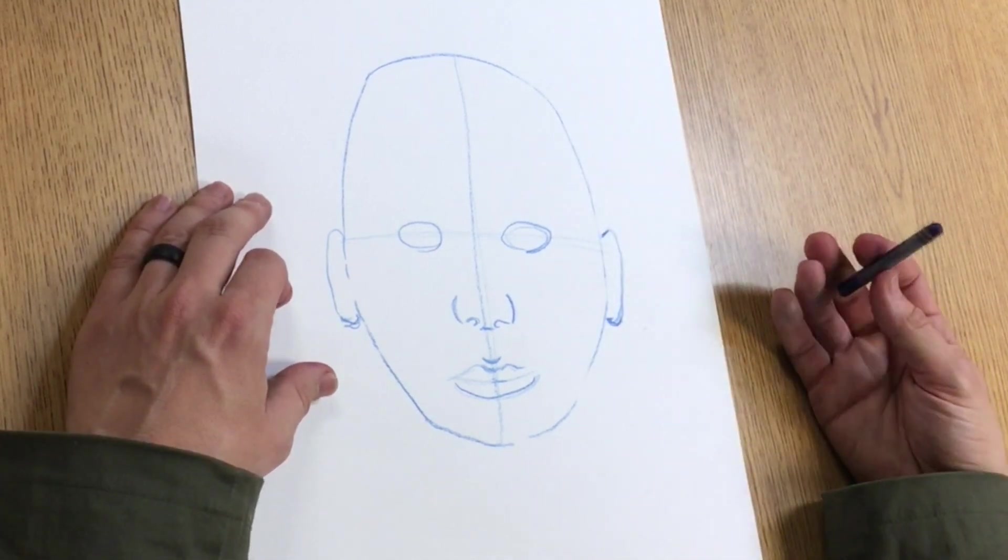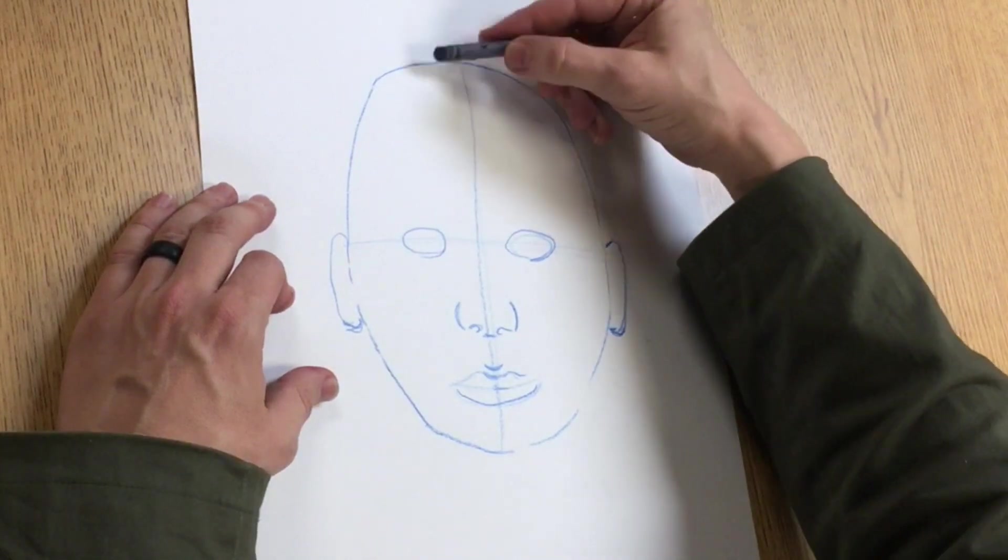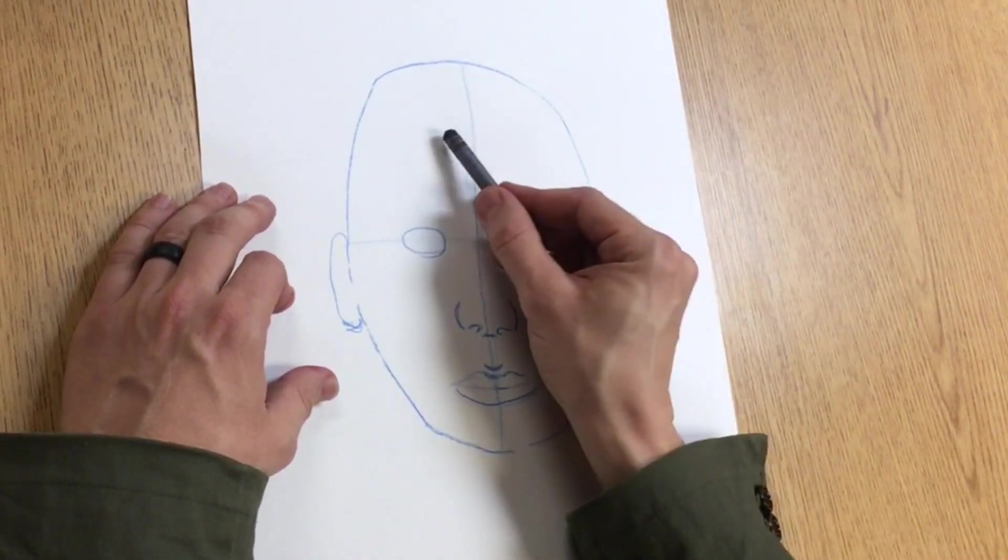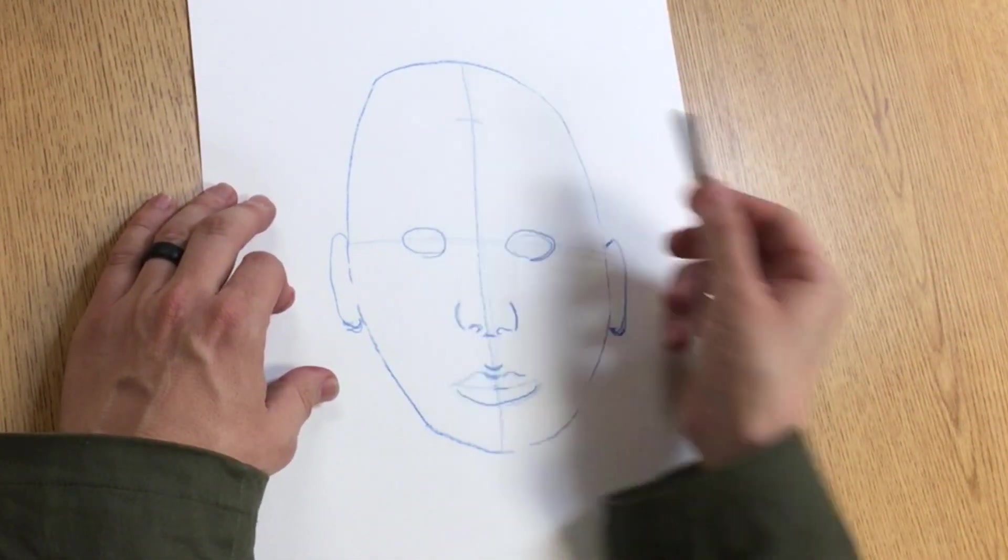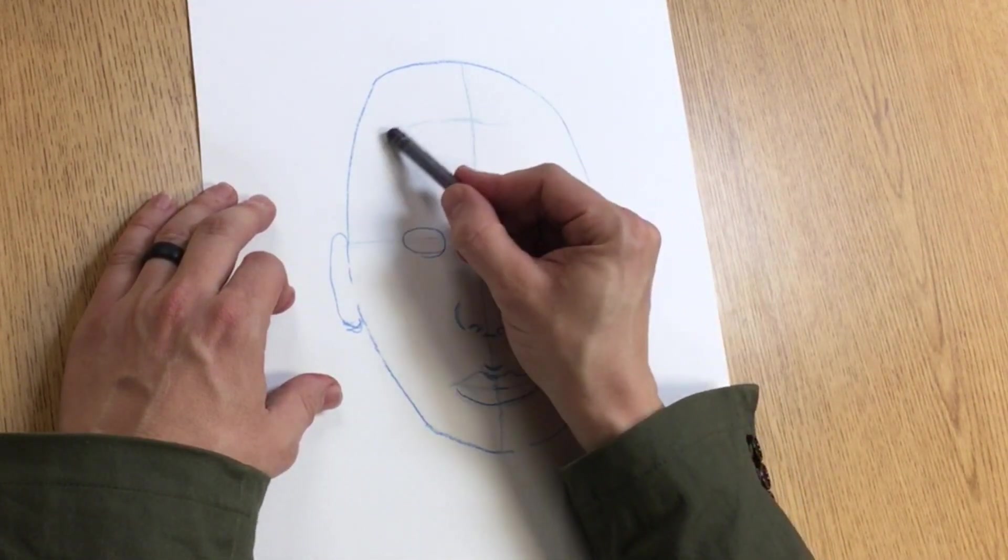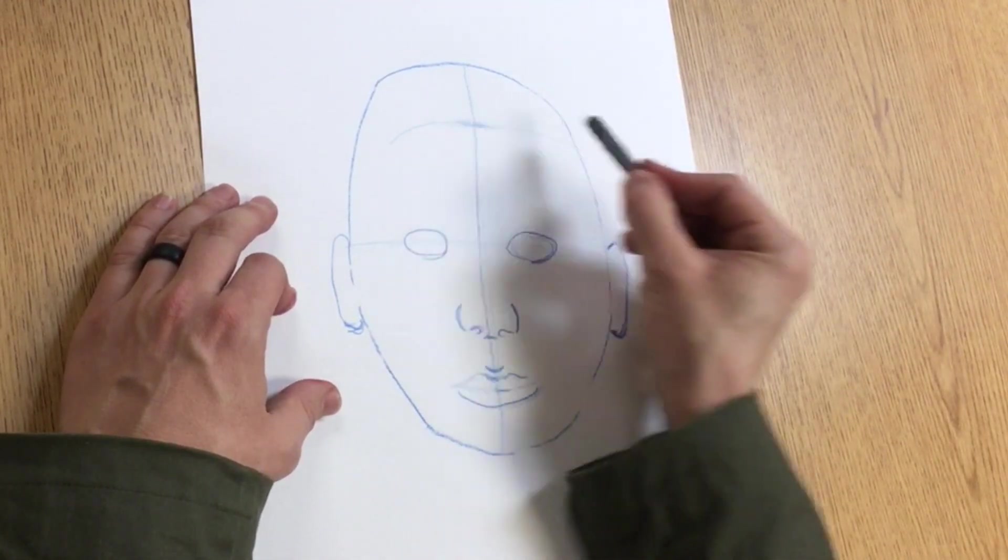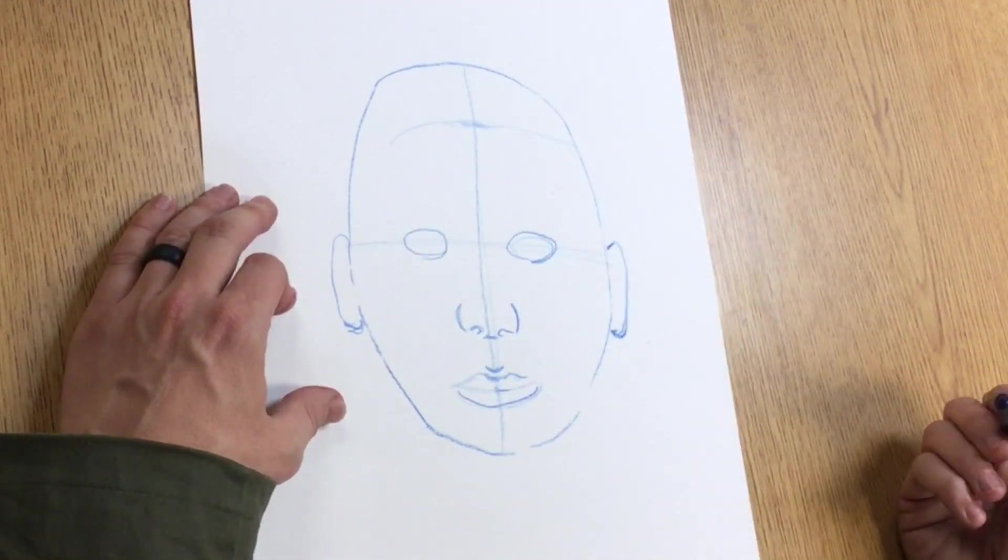Now from here when I look in the mirror, I can see that my hair does not grow right out the top of my head, but it actually starts somewhere in the middle of my forehead. And yours does too. So make a little mark there. We'll come back to our hair in a minute.